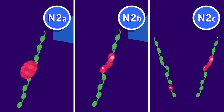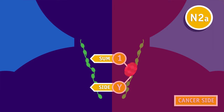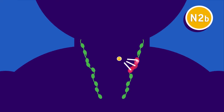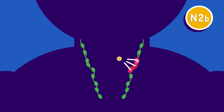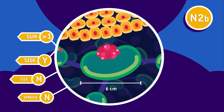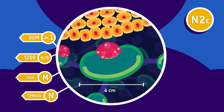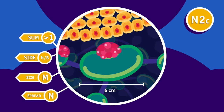N2 is split into 3 groups: N2a, N2b, and N2c. N2a means one lymph node contains cancer cells on the same side of the neck as the cancer; the node is between 3 cm and 6 cm across, and the cancer has not spread into surrounding tissue. N2b means more than one lymph node contains cancer cells on the same side of the neck; none of these nodes are more than 6 cm across, and the cancer has not spread into surrounding tissue. N2c means there are cancer cells in lymph nodes on the other side of the neck to the cancer, or in nodes on both sides of the neck; none of these nodes are more than 6 cm across, and the cancer has not spread into surrounding tissue.